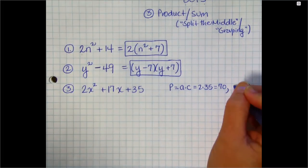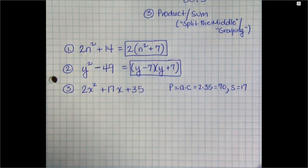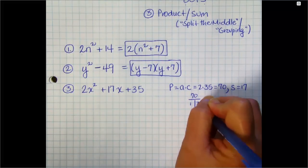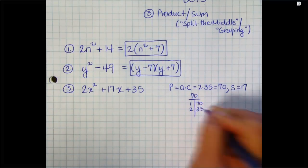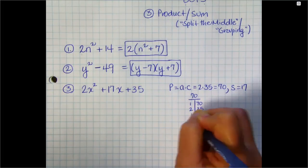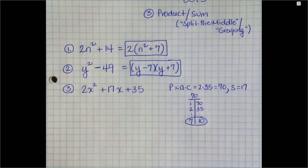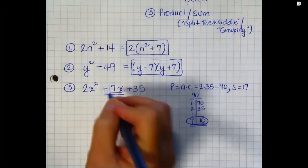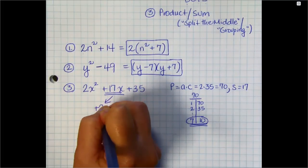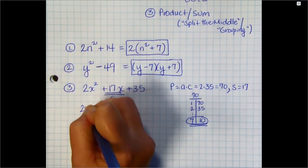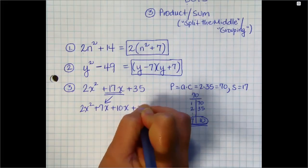The sum is your B term, which in this case is 17. So we need to factor 70, 1 times 70, 2 times 35, and so on until we find the factors that give us a sum of 17. In this case, it's 7 and 10. So I take that 7 and 10 and I rename that 17x as 7x and 10x. We split the middle. Rename your middle term. Bring down the front term and bring down the last term.